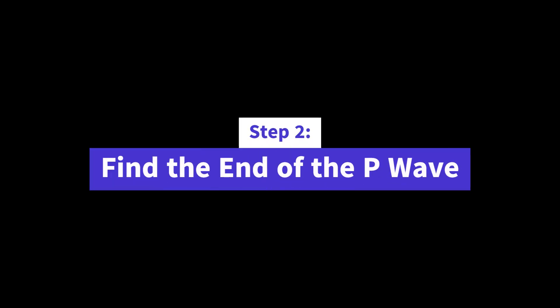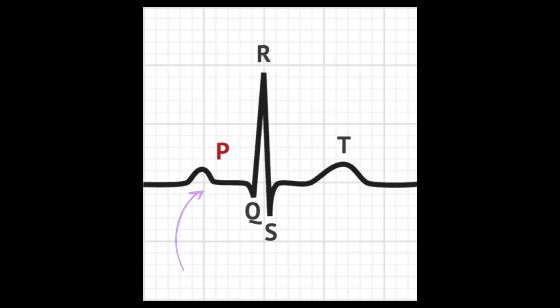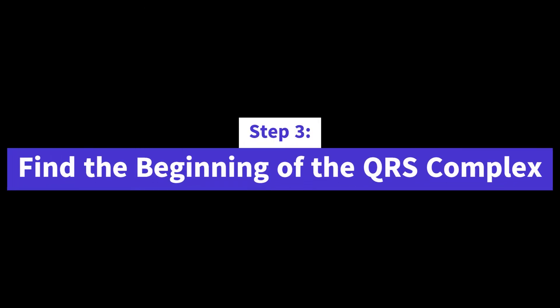Step 2: Find the end of the P wave. The end of the P wave is the point where the wave returns to the baseline. Step 3: Find the beginning of the QRS complex.